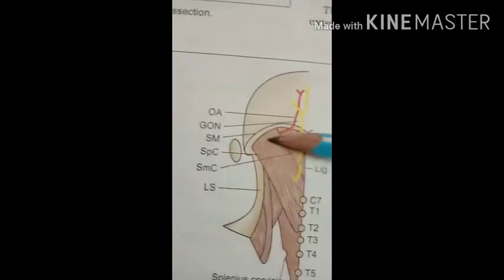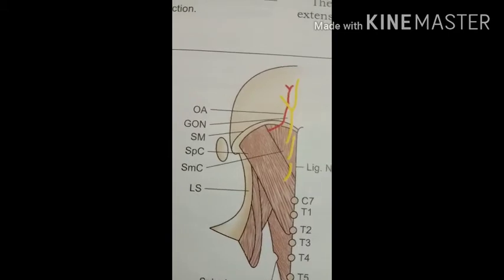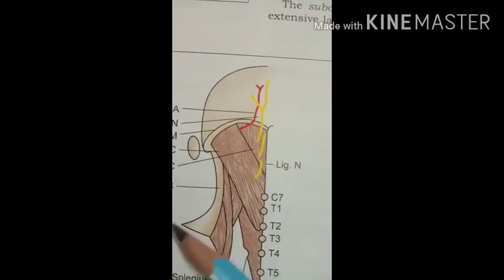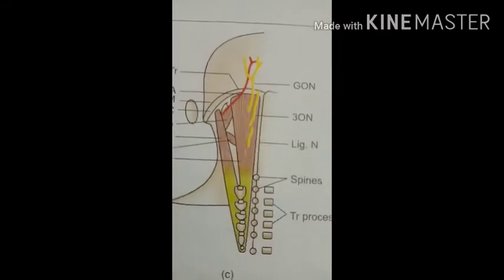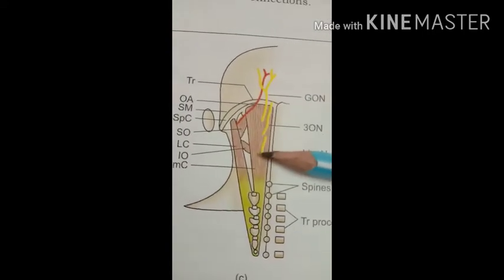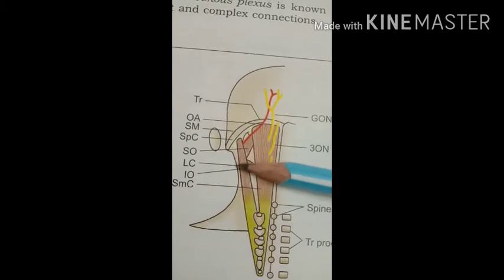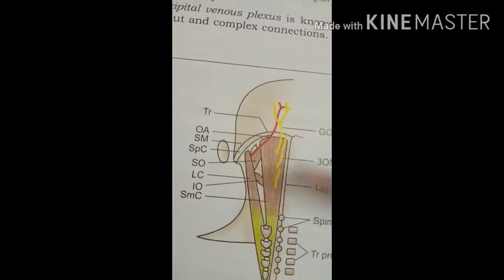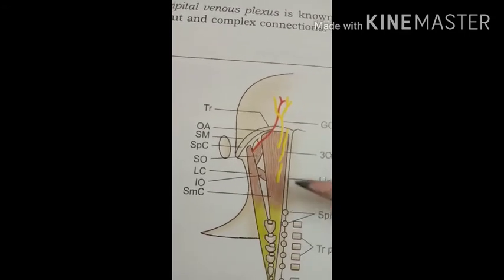Here you can see the splenius capitis muscle. After reflection of the splenius capitis muscle, you go to the third step. Here you can see the semispinalis capitis muscle, and lateral to it, the longissimus capitis muscle. These two muscles form the third layer.